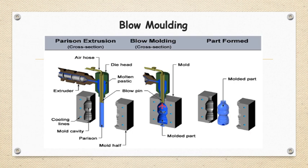The blow molding process is a little bit similar to the extrusion molding process, in which a fixed cross-section component is prepared. We take that cross-section component as the first stage of the blow molding process. The first stage is preparing a parison through the extrusion process.